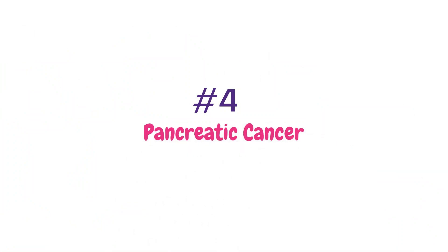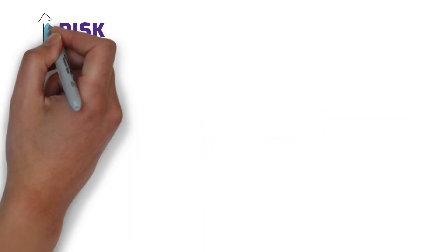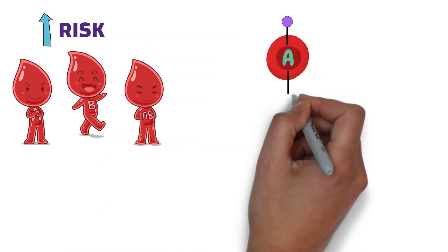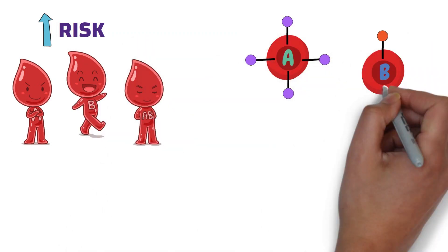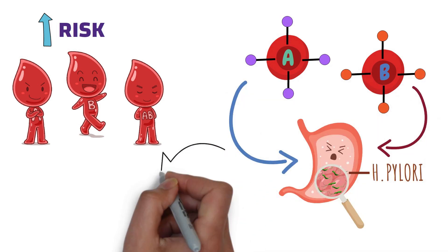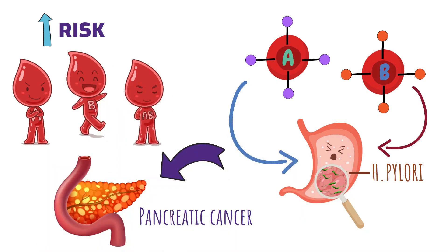Number four, pancreatic cancer. Your risk is higher if you are type A, AB or B. Molecules in type A and B red blood cells help certain bacteria called H. pylori grow in your gut. It can make you more likely to get pancreatic cancer.